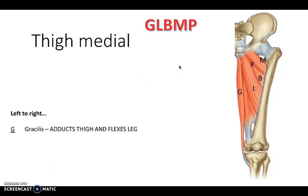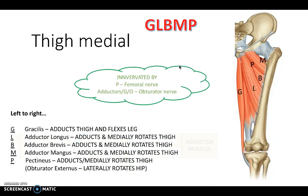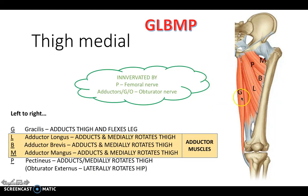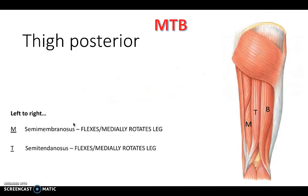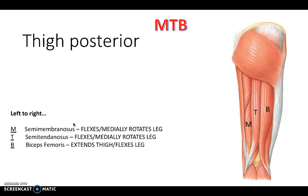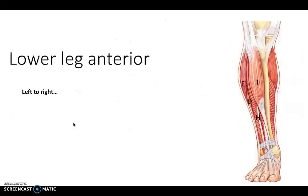Medially in the thigh we have the mnemonic GLBMP: gracilis, adductor longus, adductor brevis, and adductor magnus - the three adductor muscles. The pectineus muscle is the unusual one, innervated by the femoral nerve, while all the others are innervated by the obturator nerve. At the back of the thigh we have semimembranosus, semitendinosus, and biceps femoris. These posterior thigh muscles are innervated by branches of the sciatic nerve. In the thigh generally, the femoral nerve runs anteriorly and the sciatic nerve runs posteriorly.